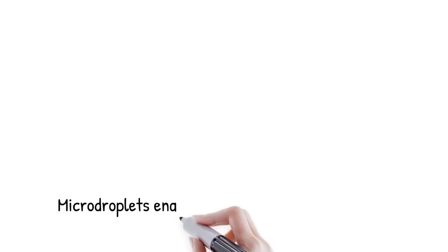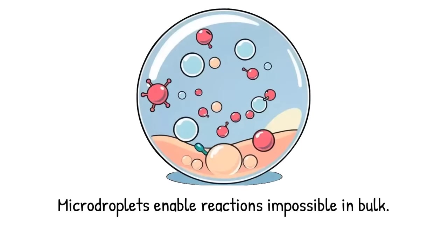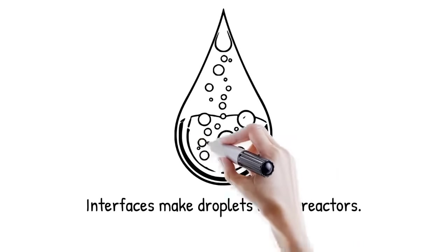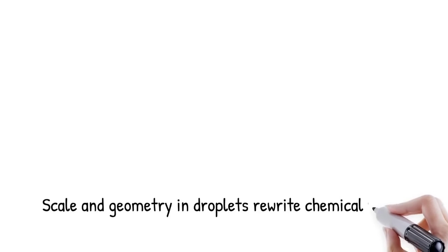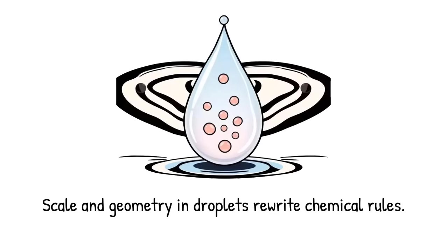The paradox of micro-droplet chemistry is that reactions forbidden, slow, or energy-intensive in bulk proceed rapidly and even spontaneously in droplets. The same molecules under the same conditions behave completely differently once confined at small scales. Interfaces turn passive systems into active reactors without added catalysts. This contradicts the expectation that bulk solution provides the normal environment for chemistry. Instead, droplets reveal hidden possibilities of molecular behavior. Neutral water droplets can generate oxidants spontaneously, a result unthinkable in bulk water. It is like whispering into a cave and hearing a thunderous echo—the environment amplifies what seemed too weak to matter.